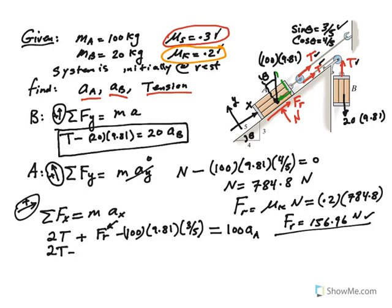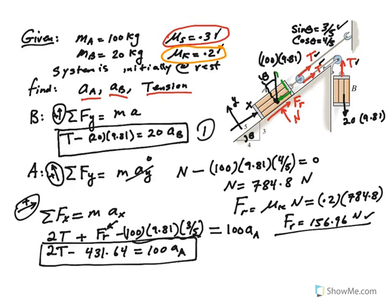Let's clean this up. After you put the value of friction here, the 156.96, and then subtract this from it, this comes out to be 2T minus 431.64 equal 100 acceleration of it. So notice we have two equations that I have in the box. Equation 1 and this is equation 2. And how many unknowns do we have? We have tension as unknown here. We have acceleration of B as unknown here in this equation. We have, again, tension and acceleration of A. So that's three unknowns.